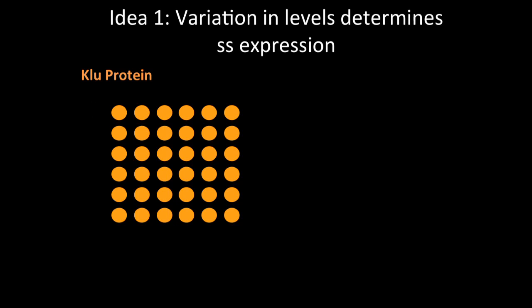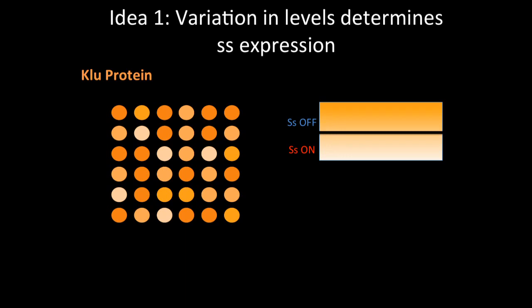So how does Clue actually affect the ratio of spineless? We have two ideas about this, and one is that perhaps the variation in Clue levels determine spineless expression. So we often think of identical cells as having identical amounts of protein, but we know that there are intrinsic differences. And so it's possible that there's a threshold for Clue protein, and if Clue is above this threshold, we get spineless off, and if it's below, we get spineless on, leading to the mosaic that we see.